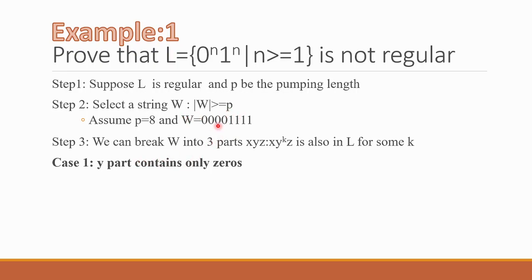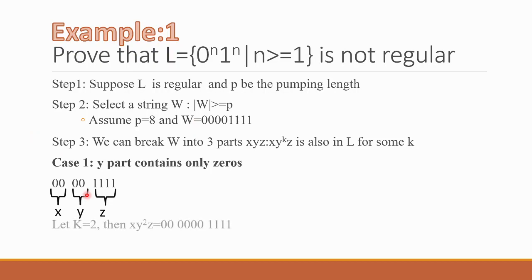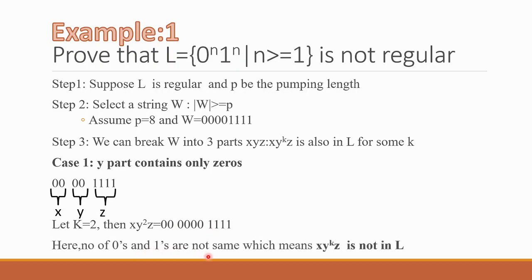Case 1: y part contains only 0s. For example, x is the first two 0s, y is the next two 0s, and z is the remaining 1111. For k equal to 2, we get xy²z. Since y is repeated twice, we now have six 0s followed by four 1s. In our language, 0^n 1^n requires the number of 0s and 1s to be equal, but here they are not. So xy^k z is not in L.